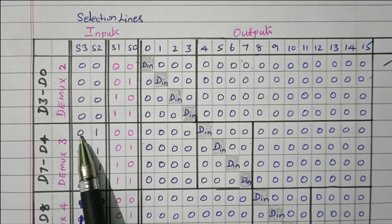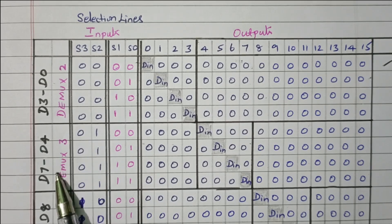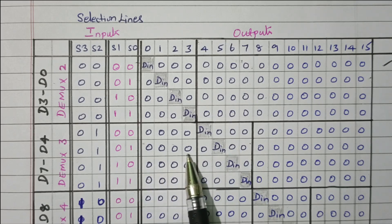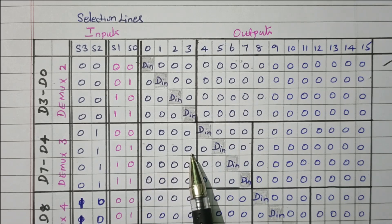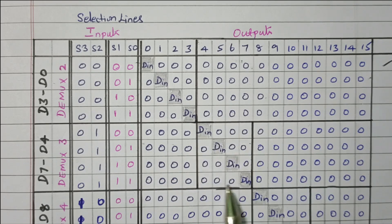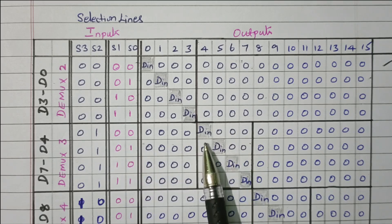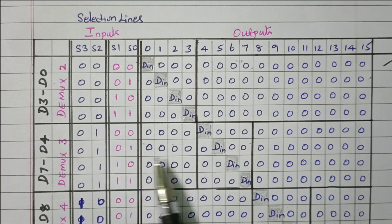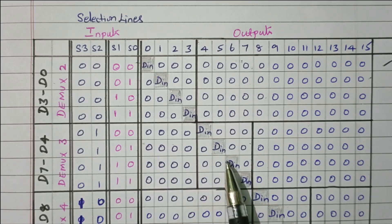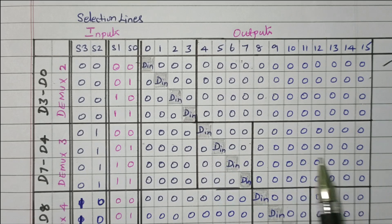If S3S2 is 01, DMUX3 will be enabled, so we get data from D4 to D7. DMUX2 is disabled, and DMUX4 and DMUX5 are also disabled. Only DMUX3 is enabled. S1S0 00 means data in the fourth position (D4); 01 means fifth position (D5); 10 means sixth position (D6); 11 means seventh position (D7). The remaining outputs are 0.